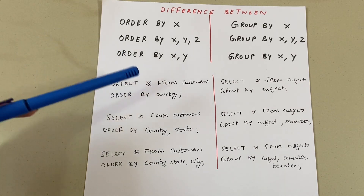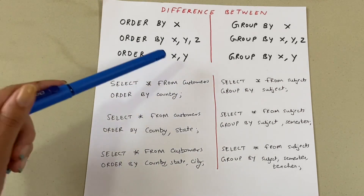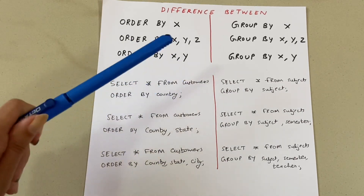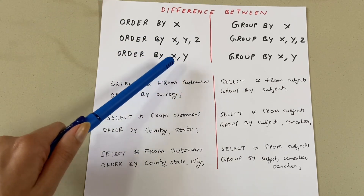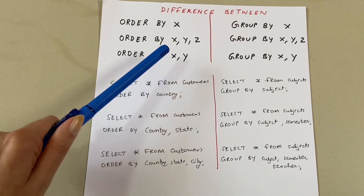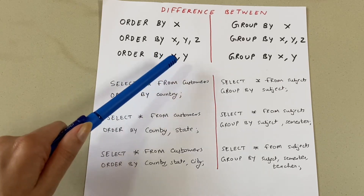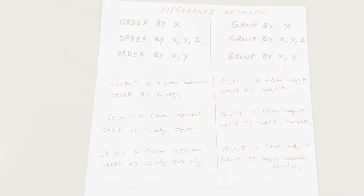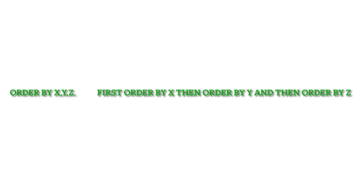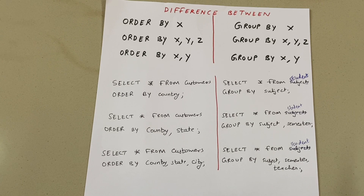This is the difference between ORDER BY X, or ORDER BY X, Y, Z — you can write any number of columns. It simply means that if two rows have the same value for X, then you order it by Y.